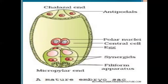If the egg apparatus consists of three or two cells, one acts as the egg cell and the others act as synergids. If synergids are present, they contain the filiform apparatus. If synergids are absent, the egg cell contains filiform apparatus, meaning the egg cell directly receives the pollen tube. This is the matured embryo sac structure in angiosperms.